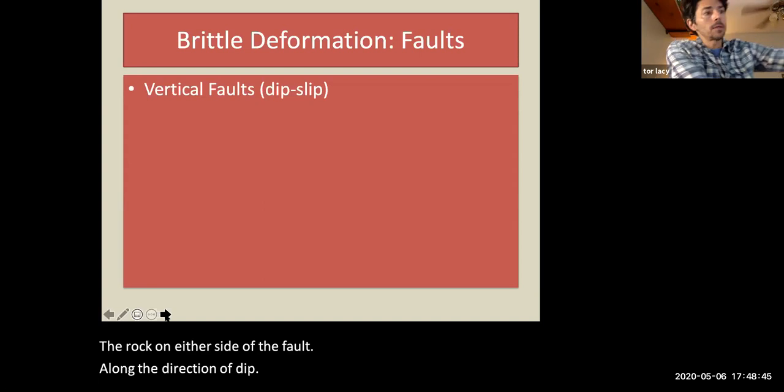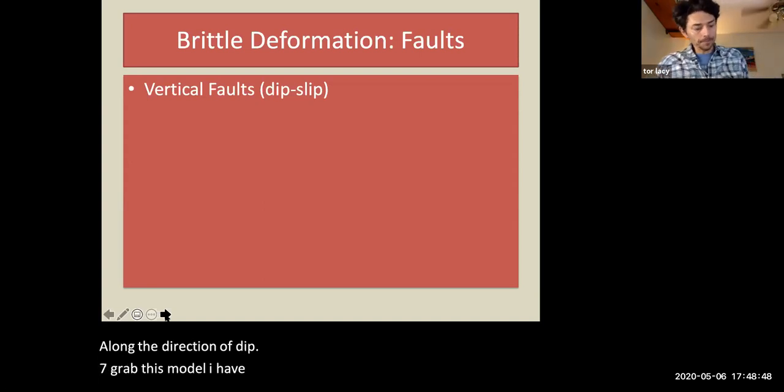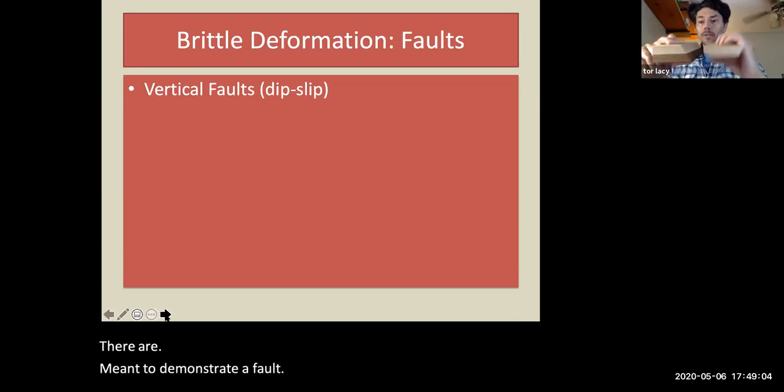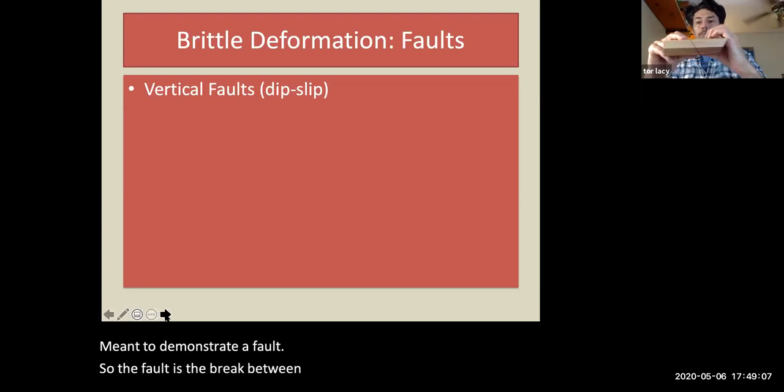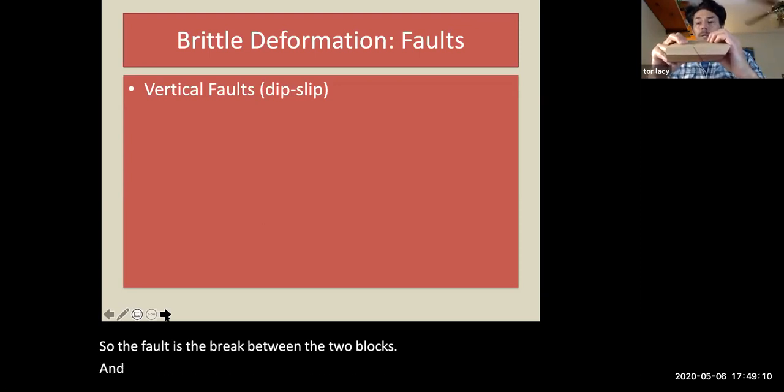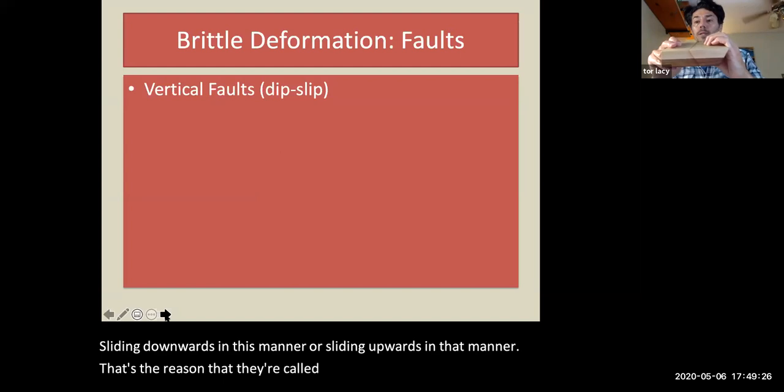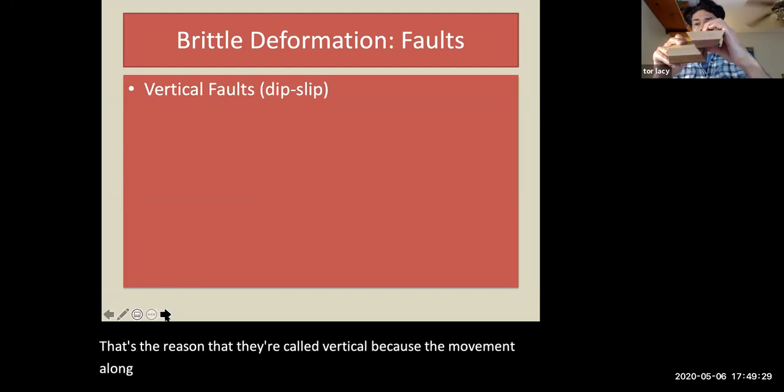So I'm going to grab this model I have here. So I've got some wood blocks here that are meant to demonstrate a fault. So the fault is the break between the two blocks. And with vertical faults, the movement along the fault is either sliding downwards in this manner or sliding upwards in that manner. That's the reason that they are called vertical, because the movement along the fault is either up or down.